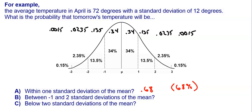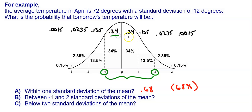For part B, what's the probability that tomorrow's temperature will be between negative one and two standard deviations of the mean? We start at negative one and go up to two, covering three sections. These sections represent 34%, 34%, and 13.5% of the data. To find the probability, we add up the areas: 0.34 plus 0.34 plus 0.135, which gives us 0.815, or an 81.5% chance.